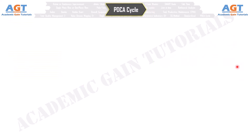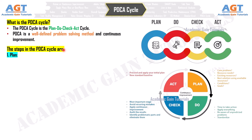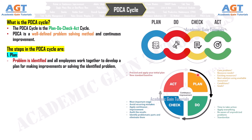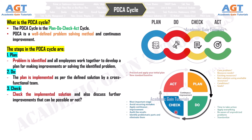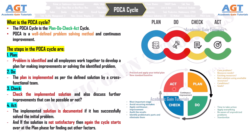Number 26: PDCA Cycle — the Plan-Do-Check-Act Cycle. PDCA is a well-defined problem-solving method and continuous improvement approach. The steps are: Plan — the problem is identified and all employees work together to develop a plan for improvements; Do — the plan is implemented as per the defined solution by a cross-functional team; Check — the implemented solution is reviewed and further improvements are discussed; Act — the implemented solution is documented if it successfully solved the initial problem. If not satisfactory, the cycle starts over at the Plan phase. Benefits: PDCA helps implement Kaizen and other continuous improvement activities and improves the brainstorming skills of the team.